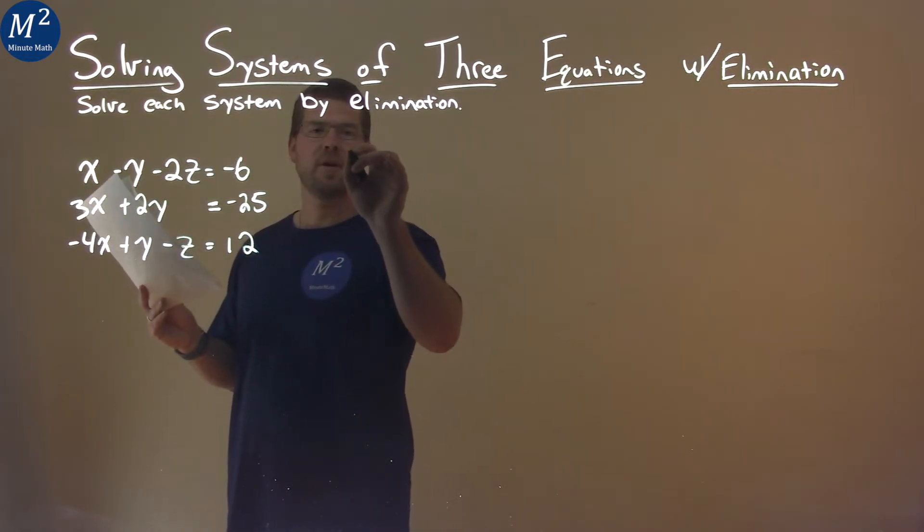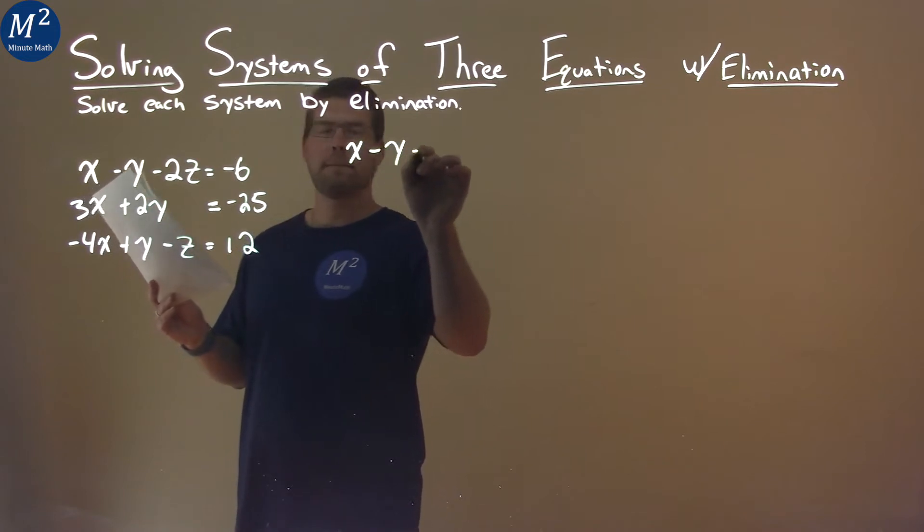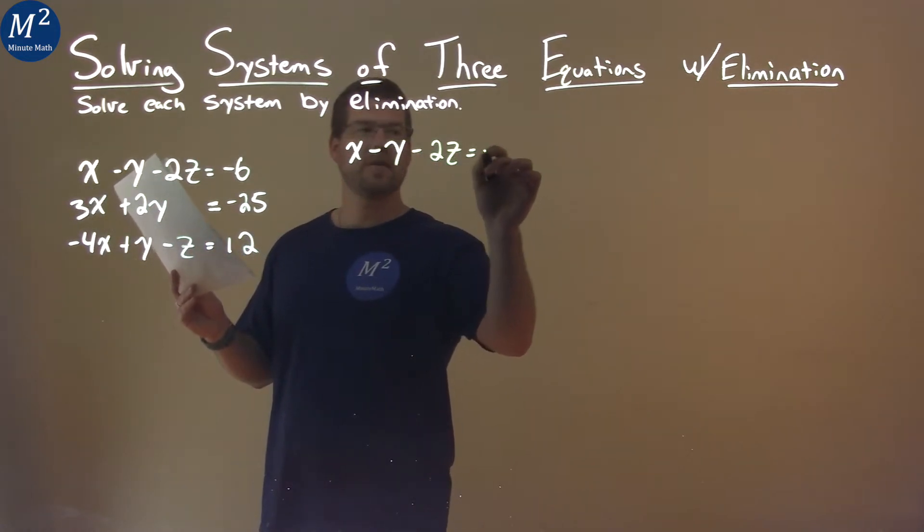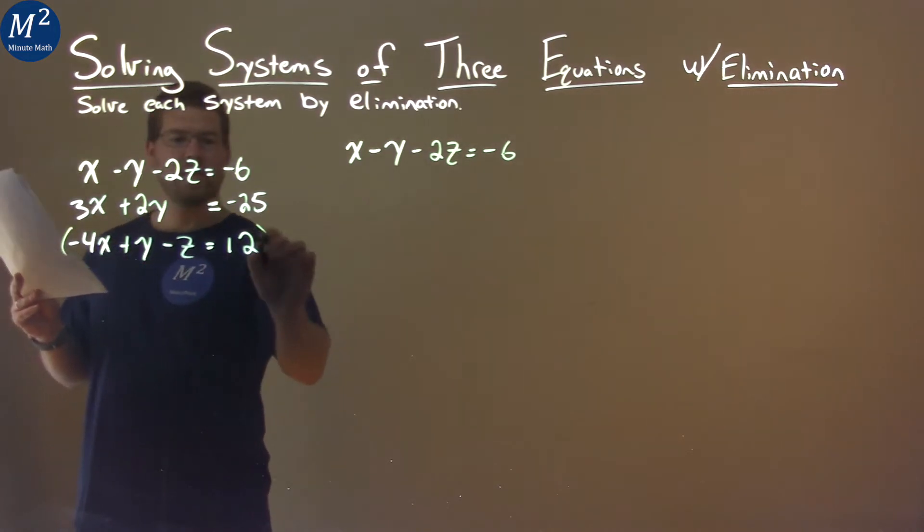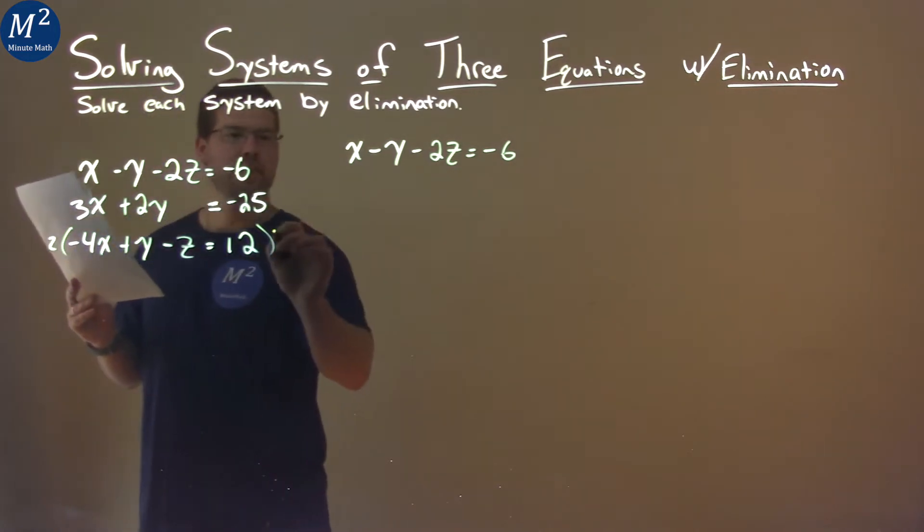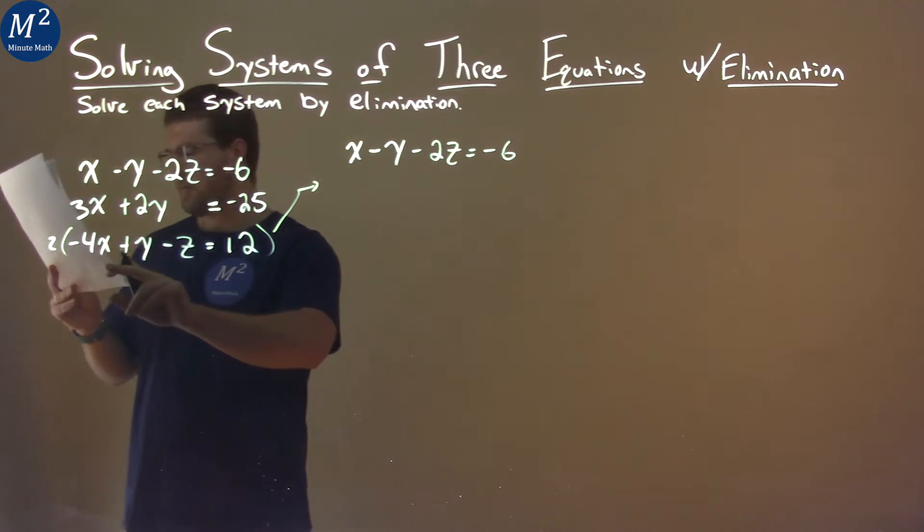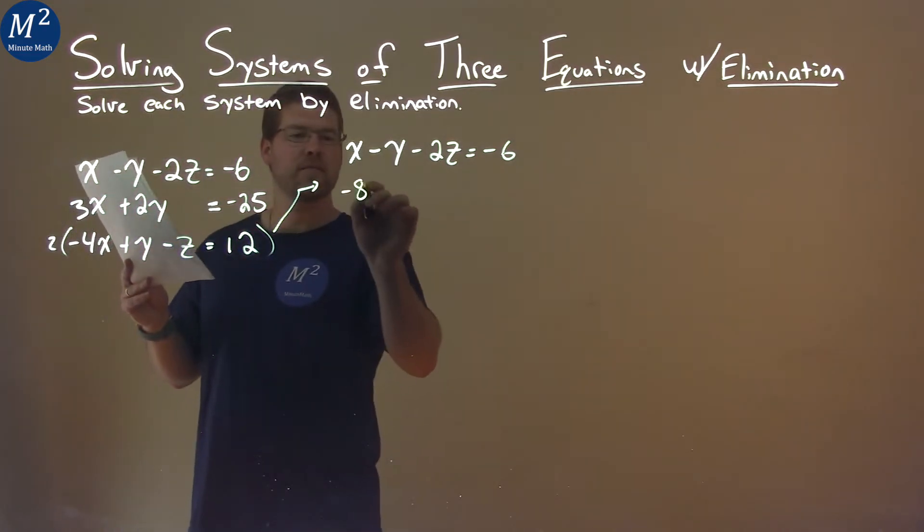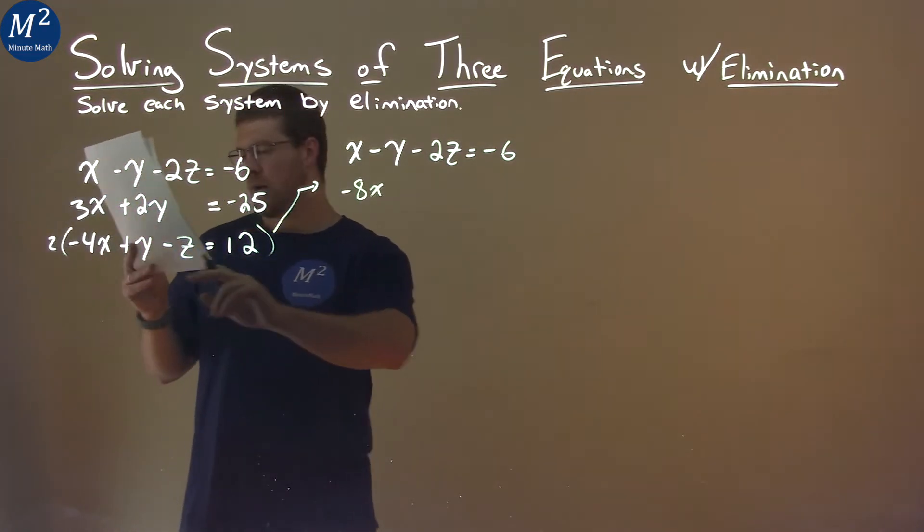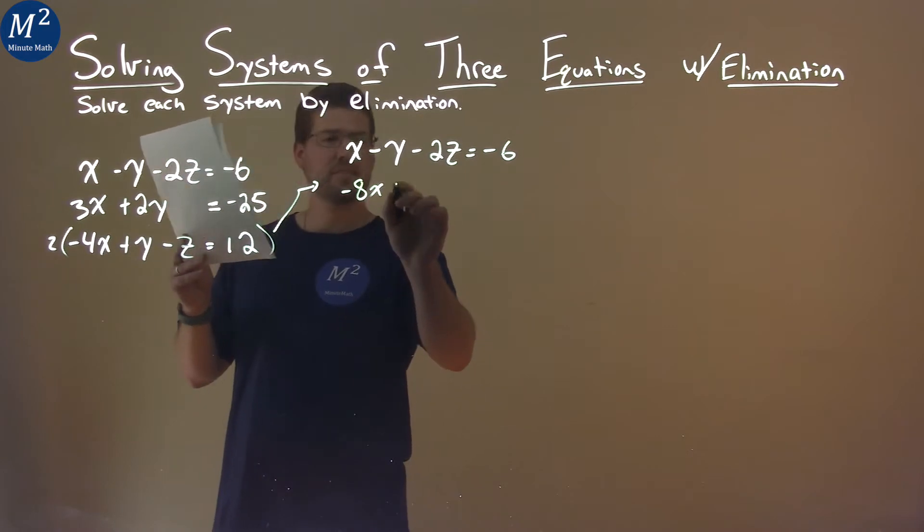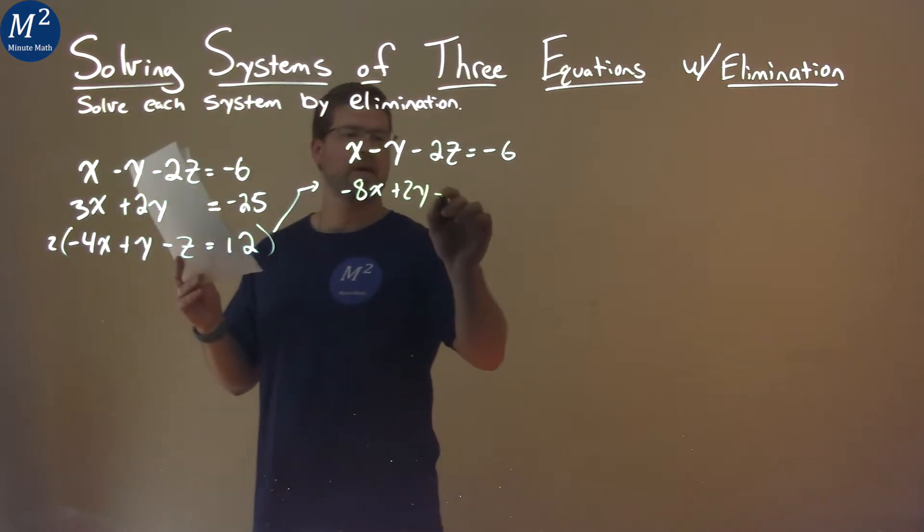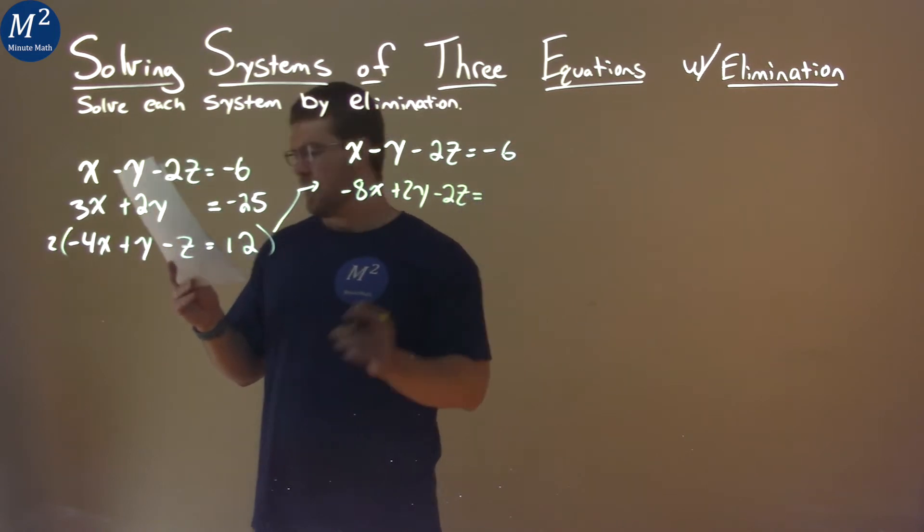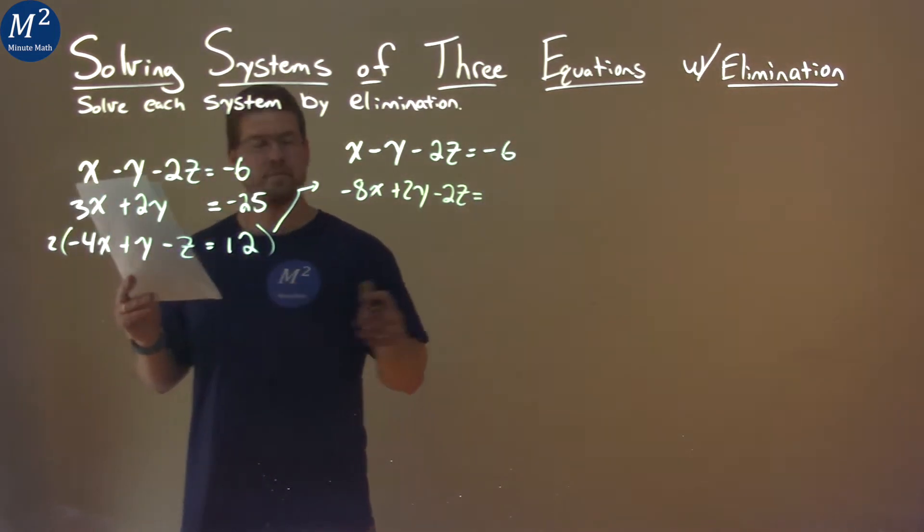Let's rewrite this here. The first equation: x minus y minus 2z equals negative 6. The third equation I'm going to multiply by 2. 2 times negative 4x is negative 8x. 2 times y is 2y. 2 times negative z is negative 2z. And 12 times 2 is 24.